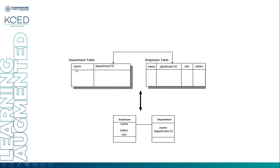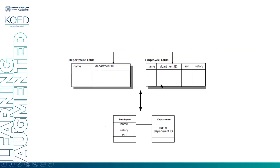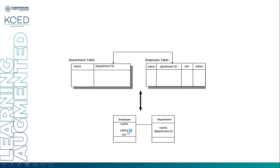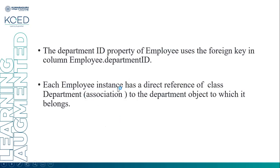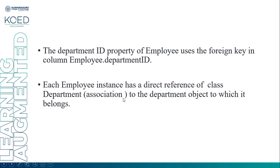Here we have a department table containing name and department, and an employee table with name, department, social security number, and salary. The employee class contains name, social security number, and salary. Department contains name and department ID. The department ID property of the employee uses the foreign key in the column employee dot department ID. Each employee instance has a direct reference to the class department — an association to the department object it belongs to.